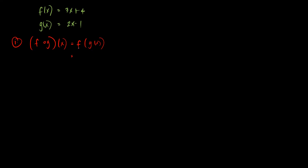The first thing we are going to do is input the function f, which is 3x plus 4. Since g of x is inside f, we write f first, then substitute g of x in place of x. So we have 3 times the quantity 2x minus 1, plus 4. A common mistake is that once we input g of x into f, we forget the constant plus 4, or any constant or term that comes after the variable. So you have to take note of that.